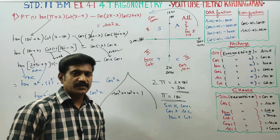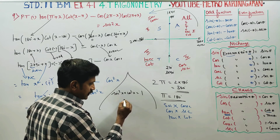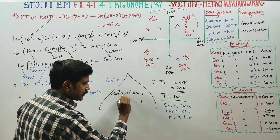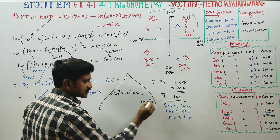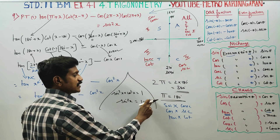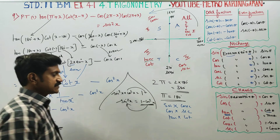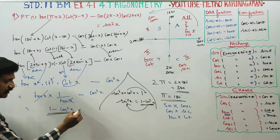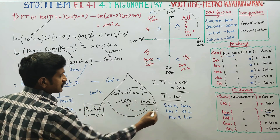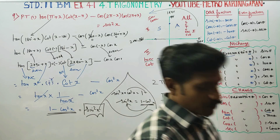sin square x plus cos square x is equal to 1. So the answer is sin square x. This is the 10th standard identity. When we use this identity, 1 minus cos square x is sin square x. The answer is sin square x — LHS proved. Thank you.